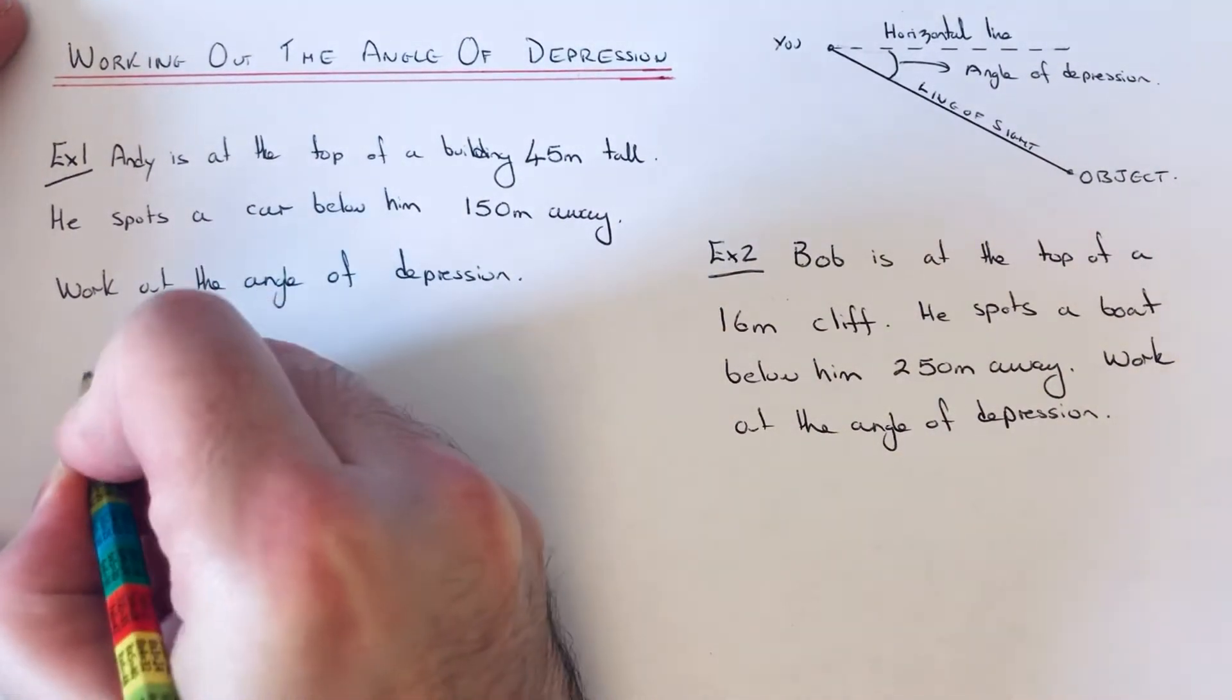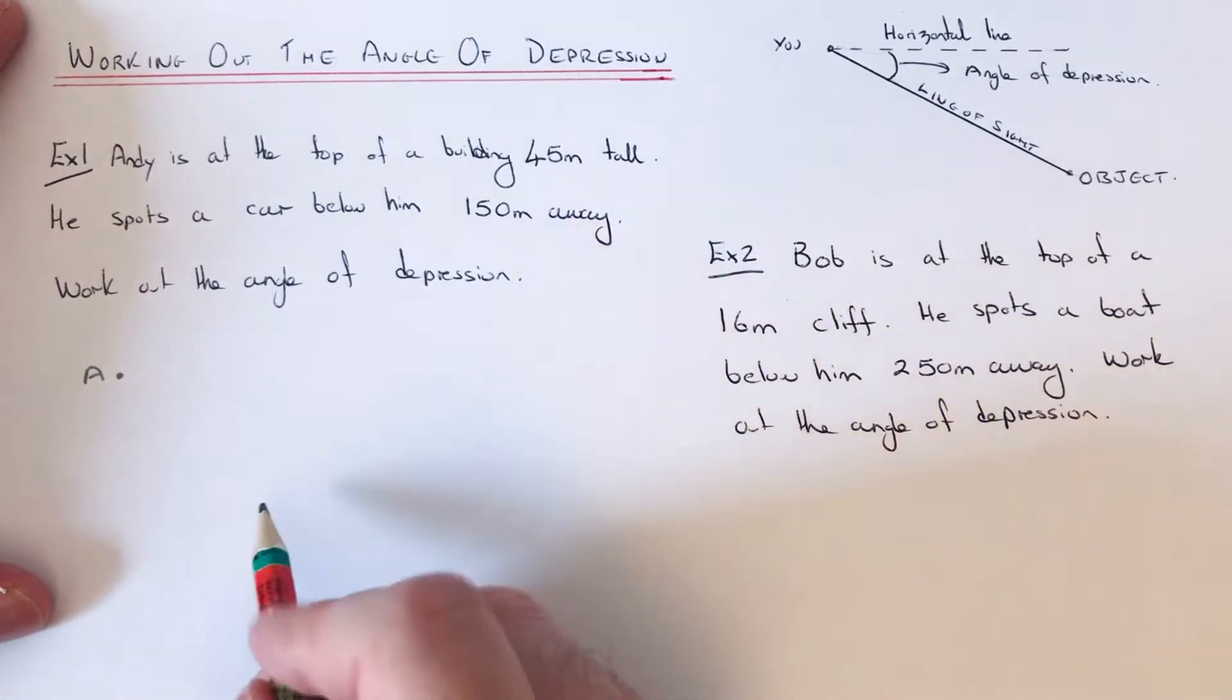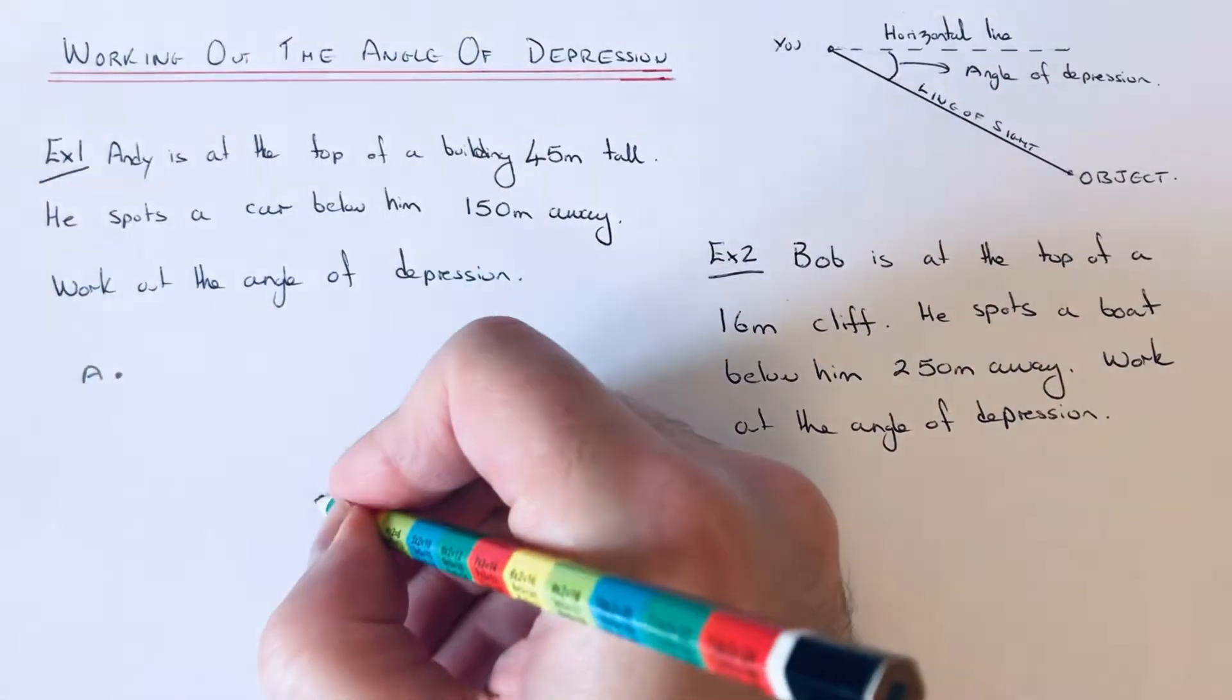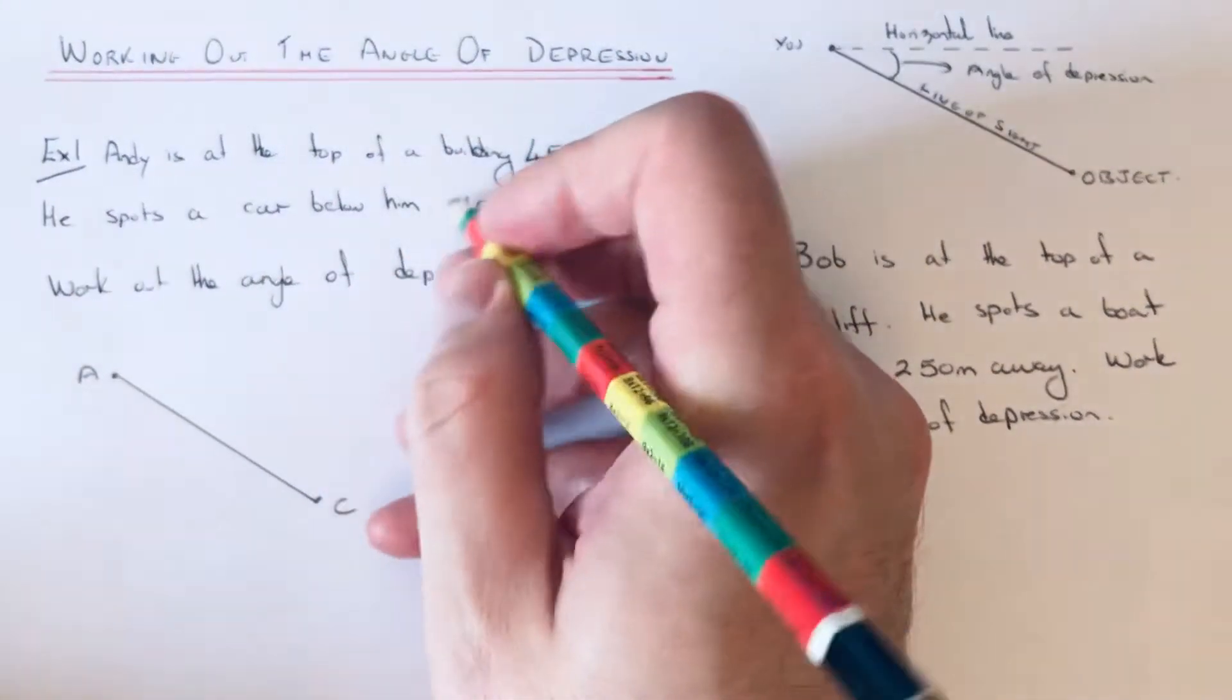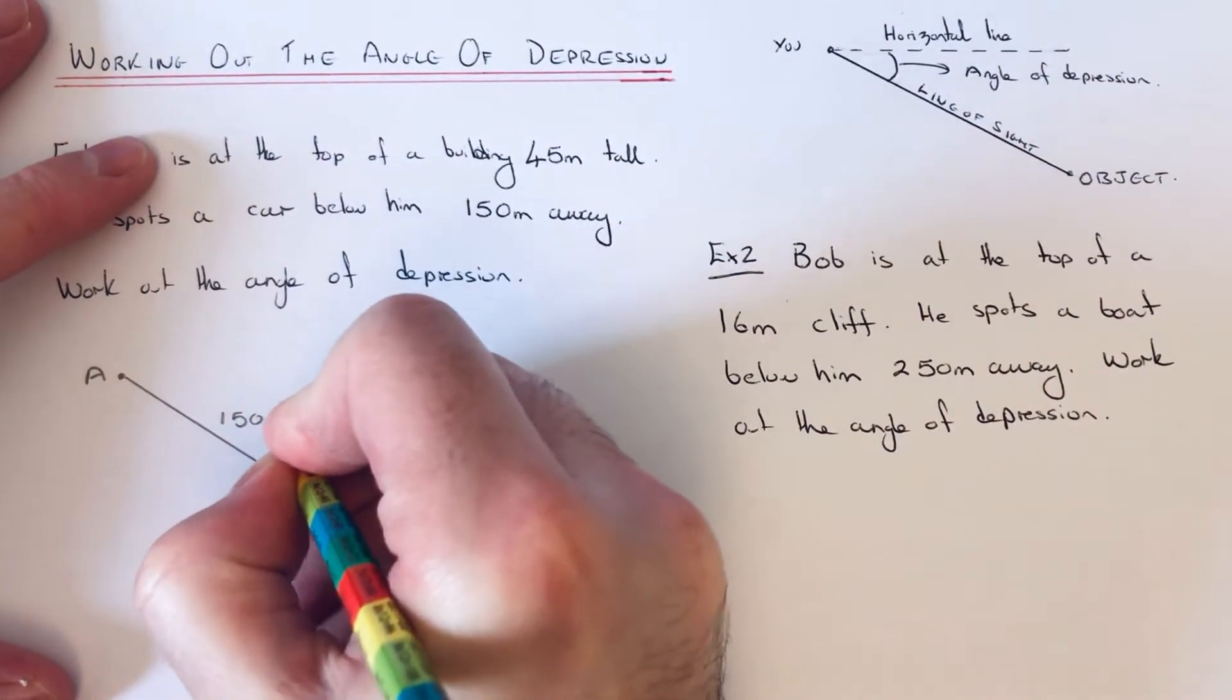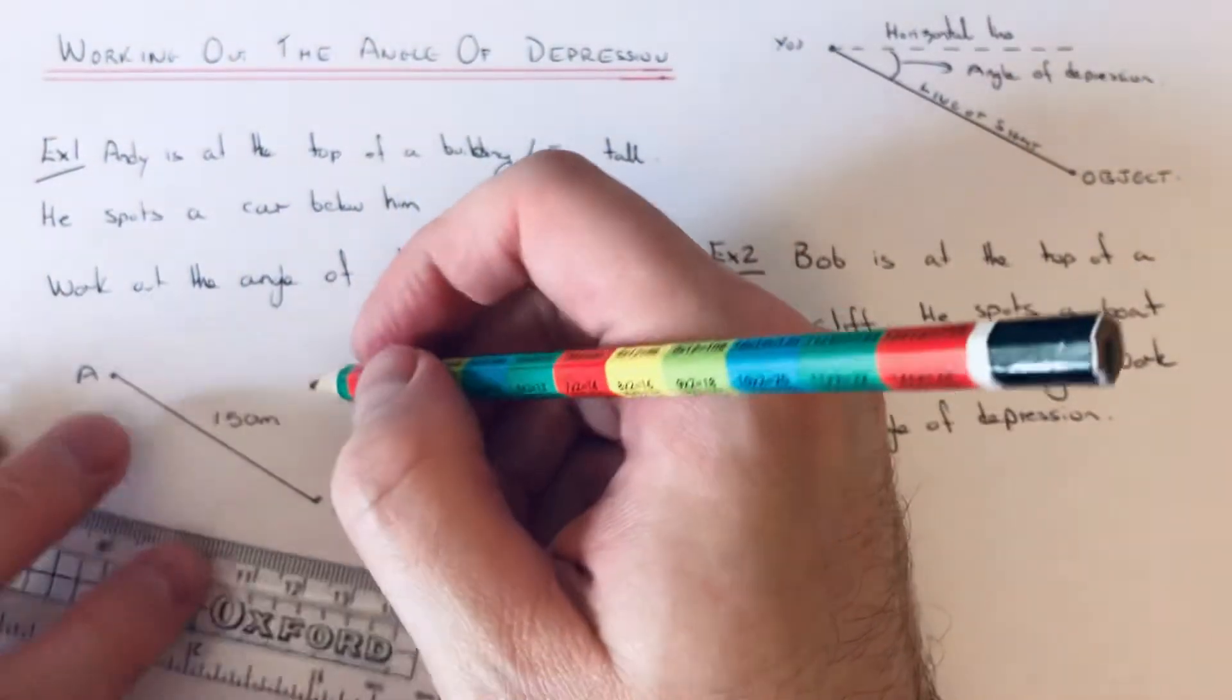So we've got Andy which is at the top of the building, and we've got a car below on the ground. If you join those two points up, the distance between those two points is 150 metres. And let's make a right-angled triangle.